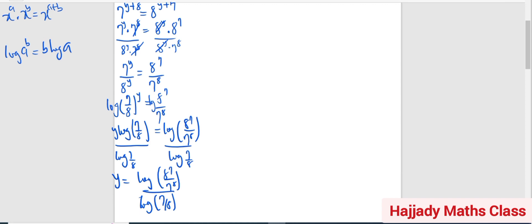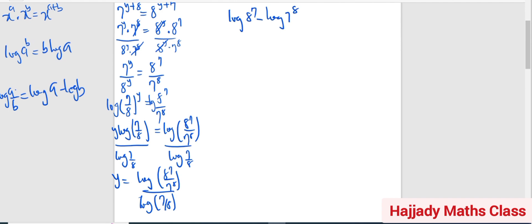So I'm going to use another law of logarithms that says log(a/b) is the same thing as log a minus log b. So for the numerator I'm going to have log 8 raised to power 7 minus log 7 raised to power 8. Also for the denominator, the same rule will be applied, so I'm going to have log 7 minus log 8.